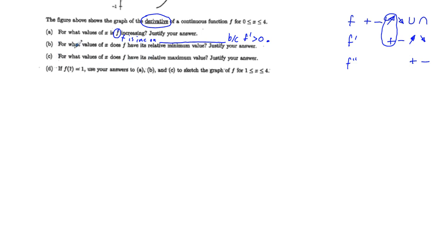I'm going to go to Part C first. For what values of x does f have a relative maximum value? Looking at the chart, we see we change from the up arrow on f to the down arrow — where f prime changes from positive to negative. So the justification is: because f prime changes from positive to negative, f has a relative maximum at x equals blank.